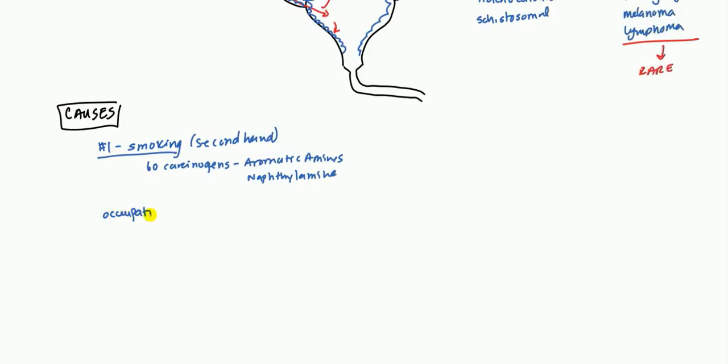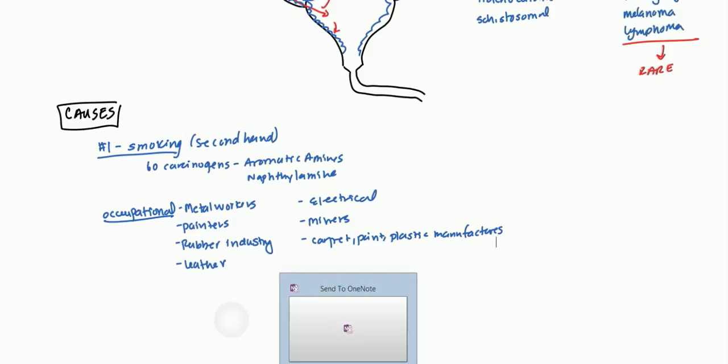Otherwise, there's a lot of occupational risks that are involved with bladder cancer. In particular, metal workers, painters because of the paints, people in the rubber industry, or even in the leather industry as well, people who are in the electrical industry, miners, and people involved in carpet, paints, and plastic, and specifically manufacturing them. And that's because they get exposed to these toxins, which eventually make their way to the bladder. Another occupation is going to be firefighters.